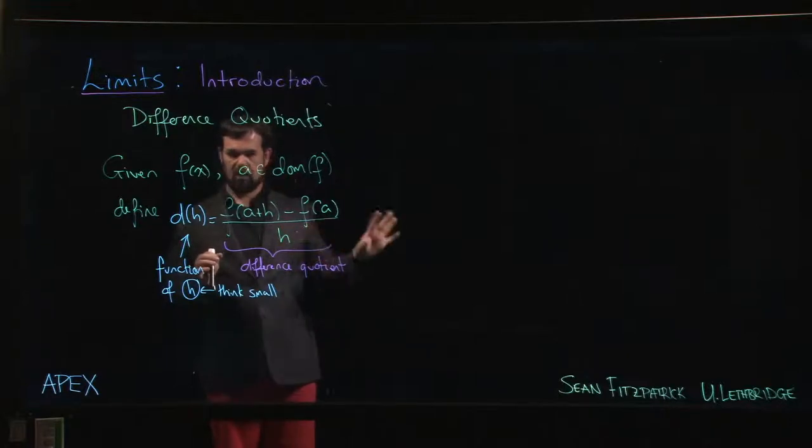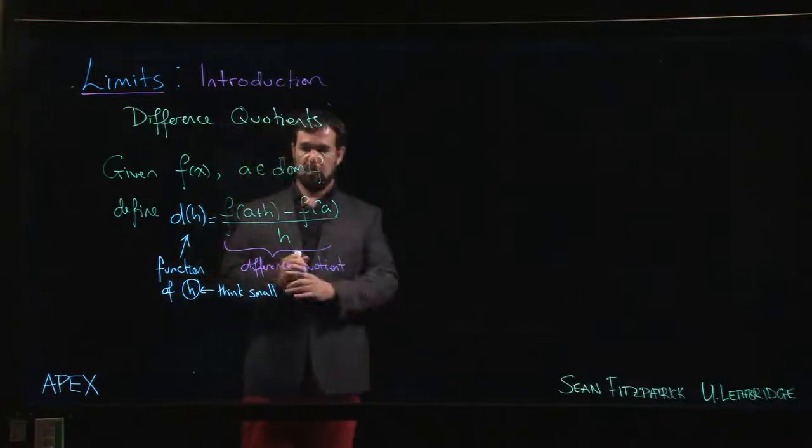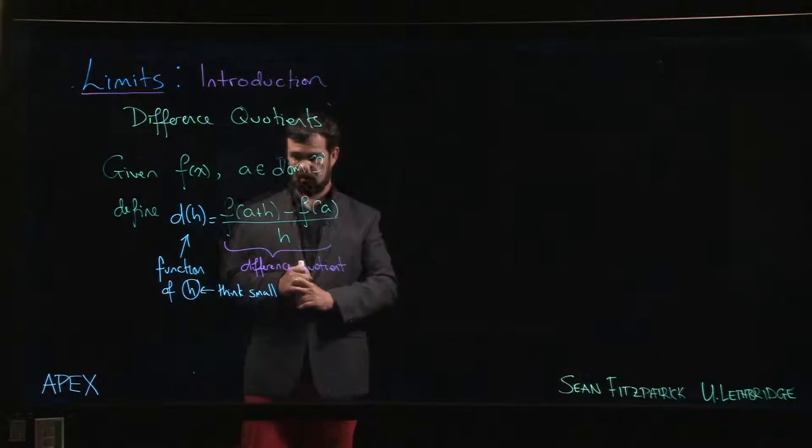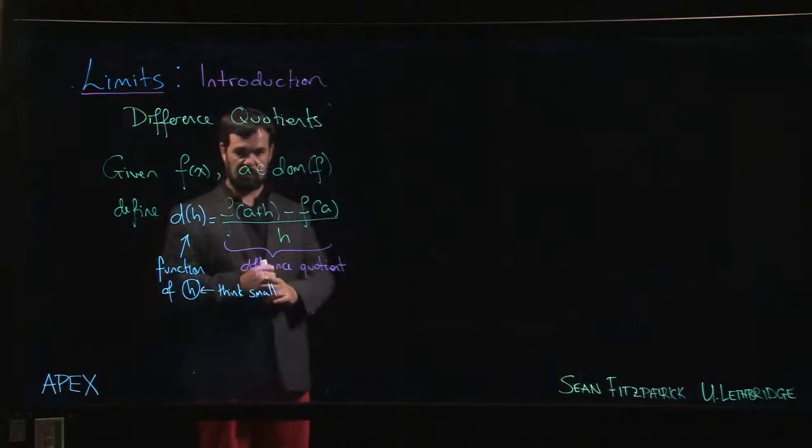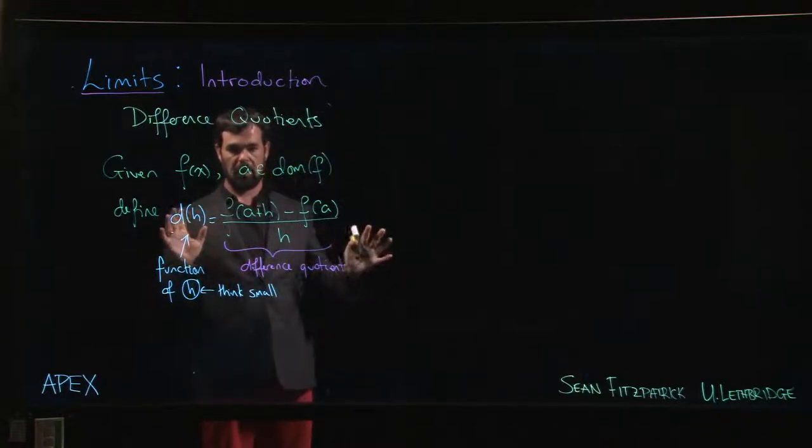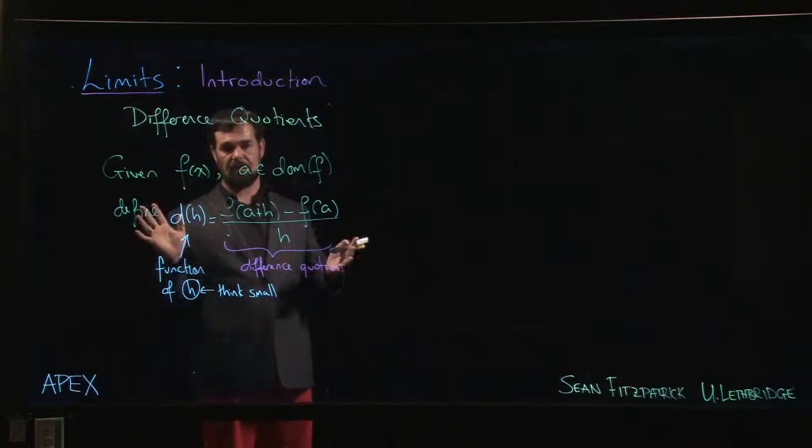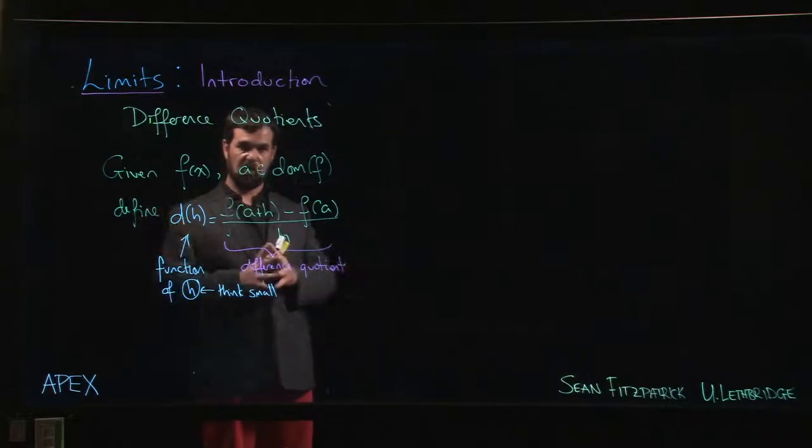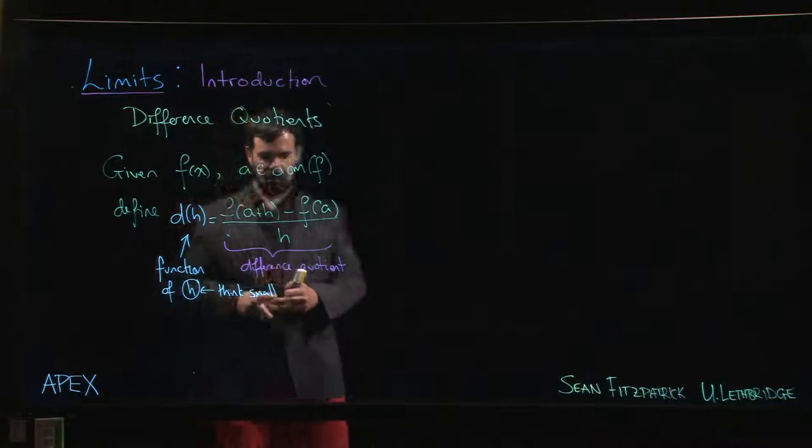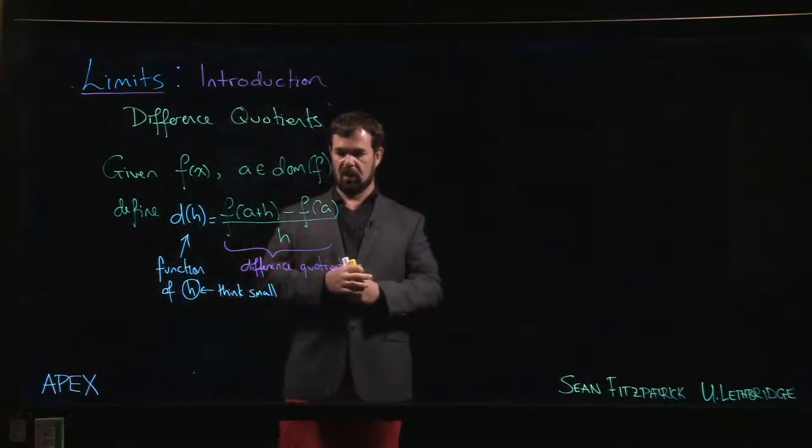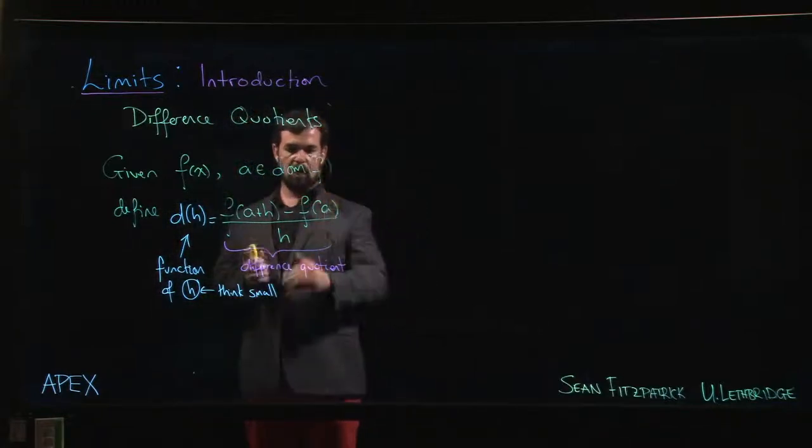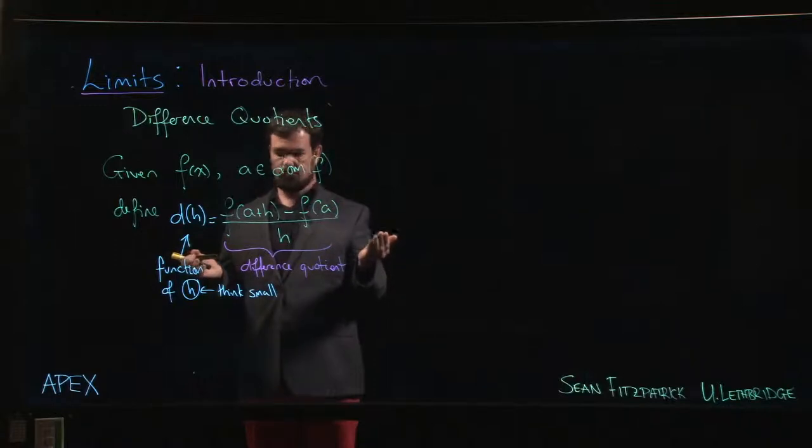So these come up quite a bit in calculus. We mentioned in the introductory video the context in which these actually appear. These appear in the context of this problem where you have some information about, let's say, position. Maybe this is—and now I'm using X as my variable here—but maybe this position is a function of time. And so we can think of this H here, think of this H as a time step. So there's some particular time at which you've measured your position.